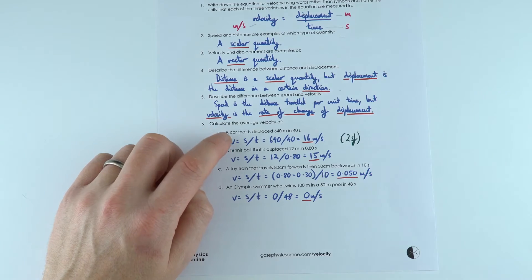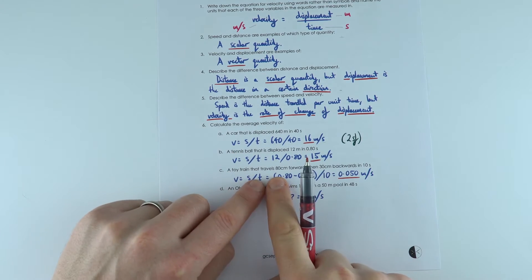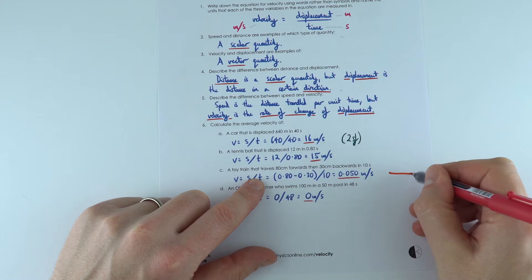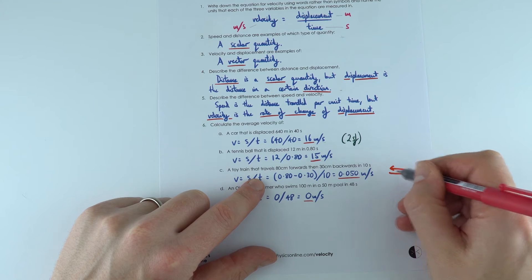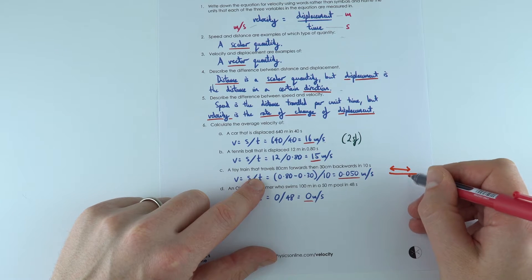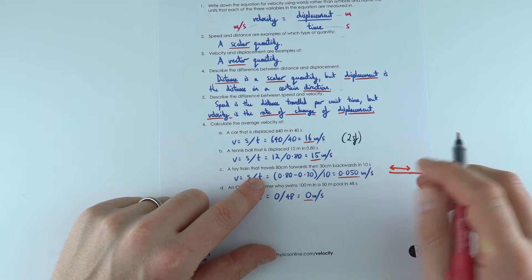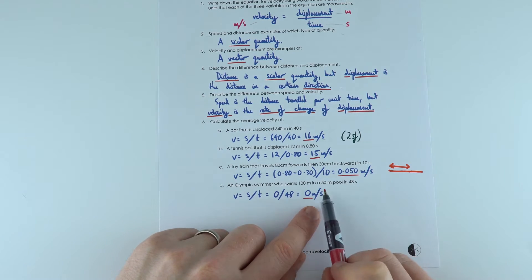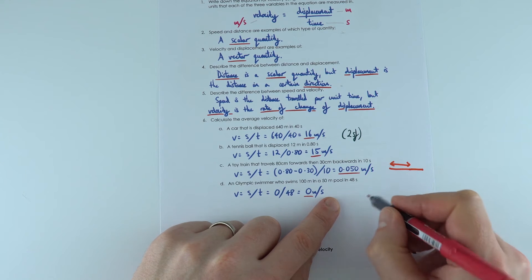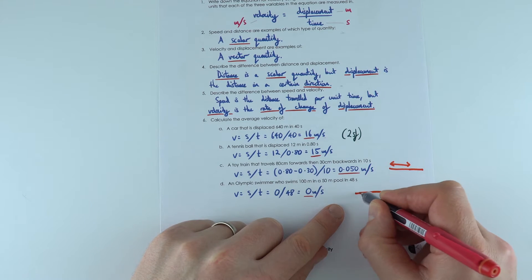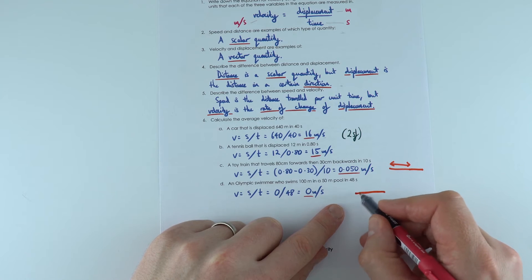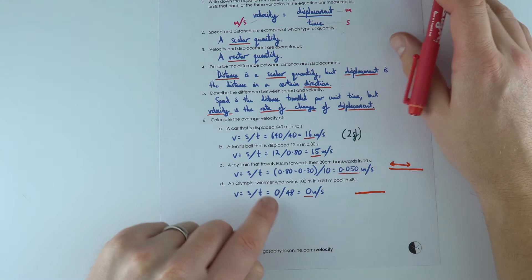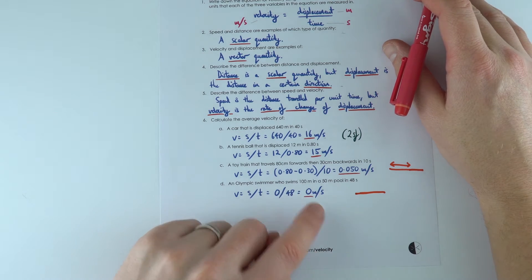So the first one, fairly straightforward, but now we've got the train that goes forwards and then backwards, and that means the total distance is bigger than its actual final displacement. So this one here is 0.05. And the last one, because it's a 50 meter pool and they go 100 meters, that means they go 50 meters up the pool, 50 meters back. And at the end, they're where they started. So their displacement is 0, so their velocity is 0.